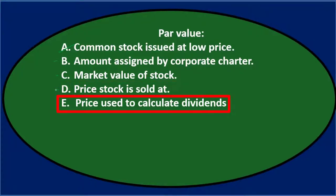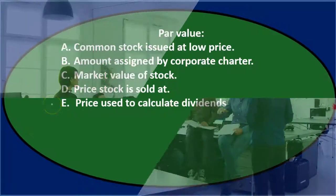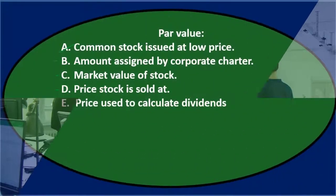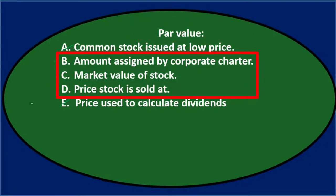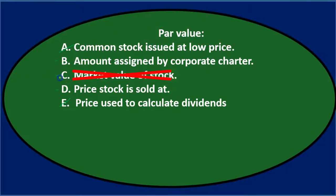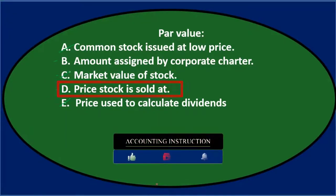E) price used to calculate dividends: that seems unusual — why would we use a price to calculate dividends? The board of directors comes up with dividends somehow, maybe using par value, but not necessarily. So E doesn't look right. We're left with B, C, and D: amount assigned by corporate charter, market value of stock, or price stock is sold at. Par value and market value probably aren't the same thing.